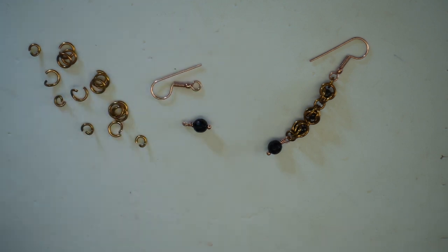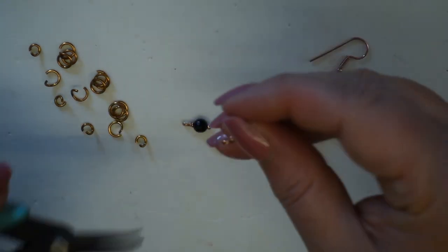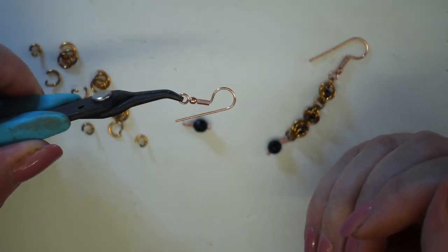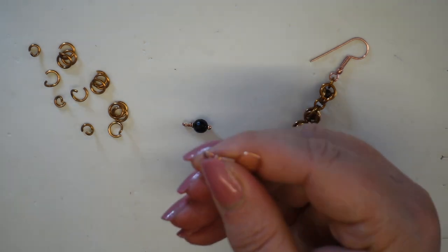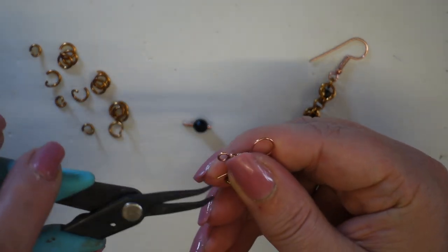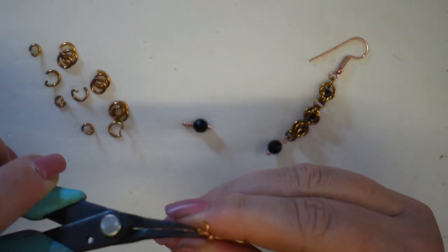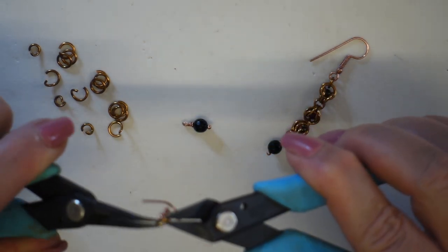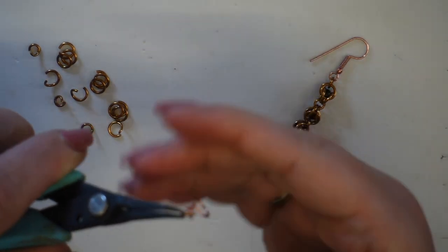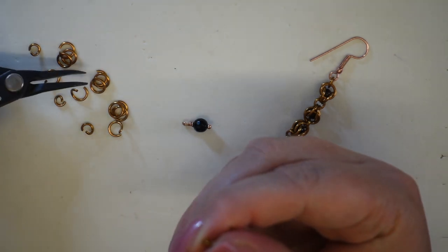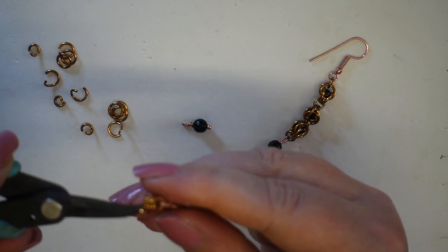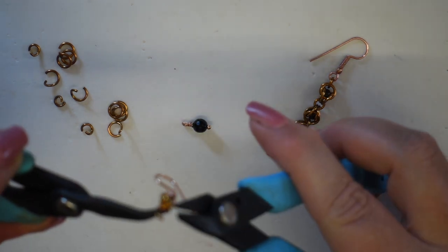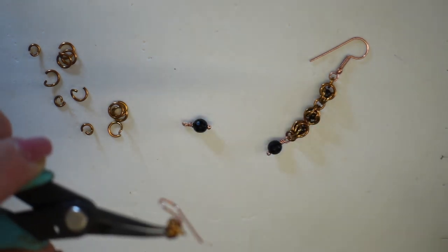Instead of actually having a starting piece of wire, I'm going to take the shepherd hook and attach my three mil jump ring, open and close. Then I'm going to add one of my sets with the two attached and close.